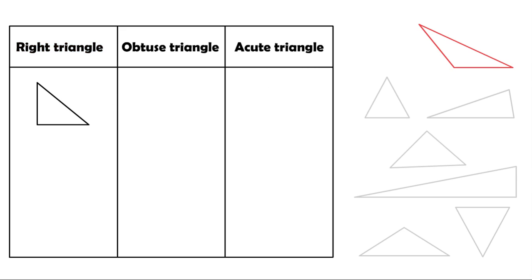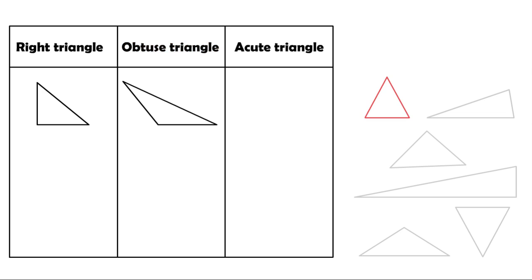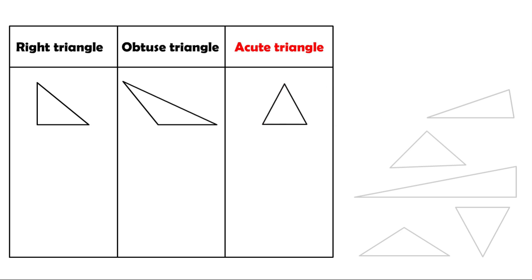While this one is an obtuse triangle because it has an obtuse angle within it. This triangle is an acute one since all its angles are smaller than a right angle. This one is also an acute triangle.